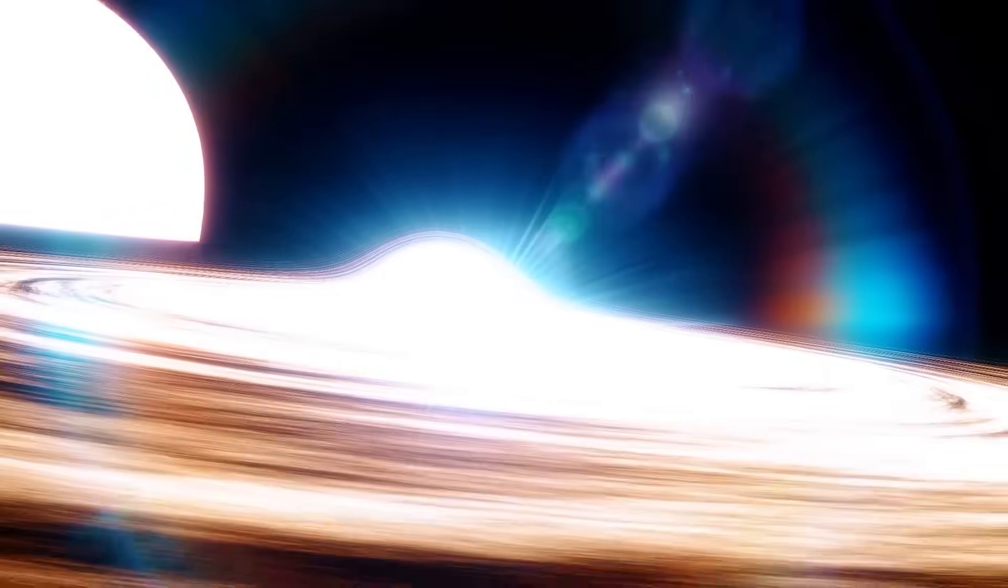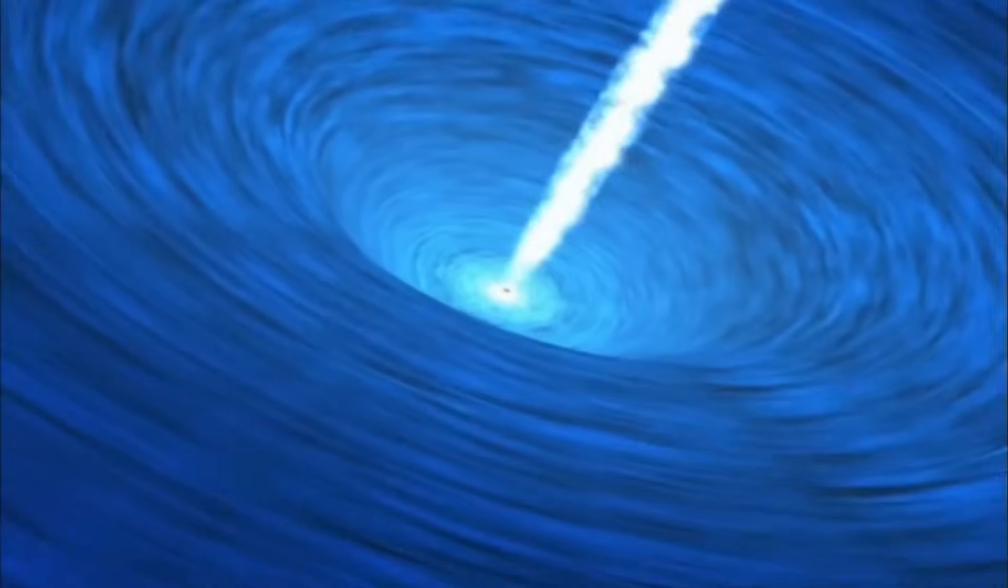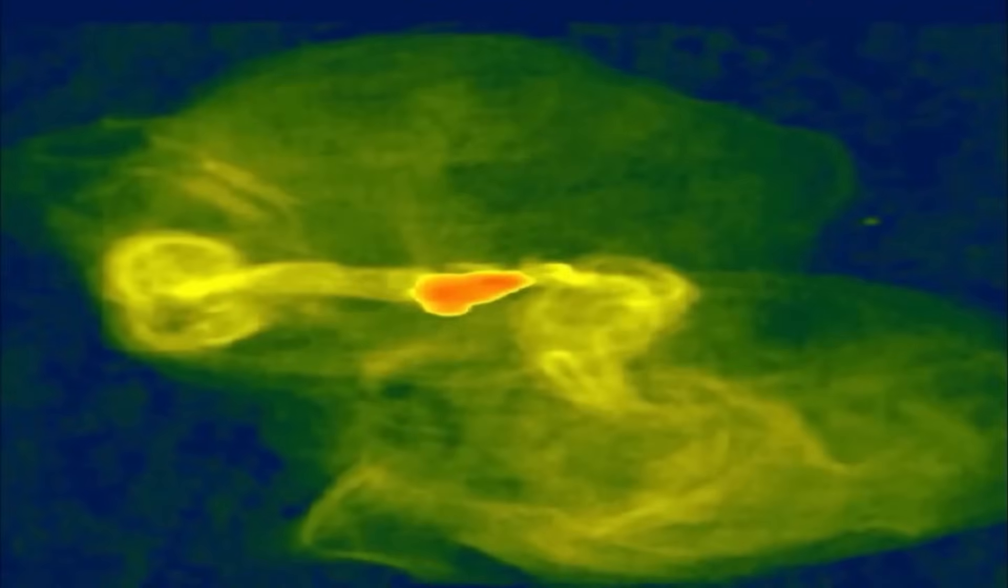The distinguishing feature of a white hole is that it only allows matter and energy to flow outward. Nothing can cross its event horizon from the outside to the inside, which distinguishes it primarily from black holes.